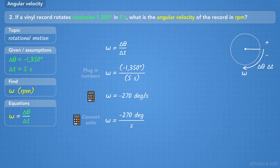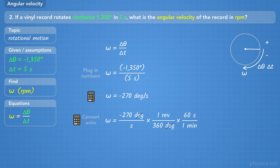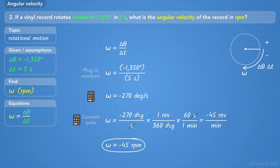So we'll need to convert from degrees to revolutions, and from seconds to minutes. Starting with negative 270 degrees per second, we multiply by one revolution per 360 degrees — degrees cancel — leaving revolutions per second. Then we multiply by 60 seconds per one minute; seconds cancel, and we get negative 45 revolutions per minute. So the angular velocity of this record is negative 45 RPM.